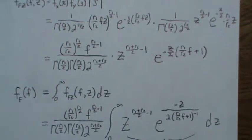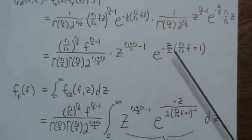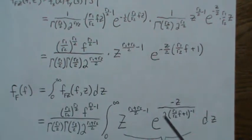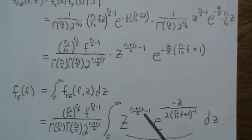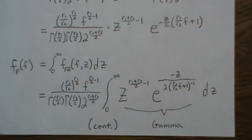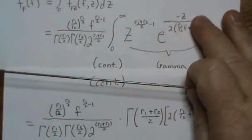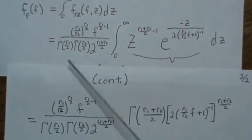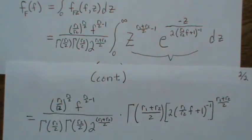We integrate from 0 to 1. Taking one piece to the denominator, we recognize that whenever you have z to the something minus 1, times (1 minus z) to the something, that's a gamma distribution integrand. We know what that integrates to — it integrates to gamma of (r1 plus r2) over 2, which is the beta function result.